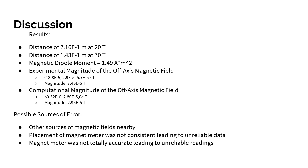The experimental magnitude of the off-axis magnetic field in vector form is provided below, and its magnitude is 7.46 times 10 to the negative 5 teslas. The computational magnitude of the off-axis magnetic field in vector form is also provided, and its magnitude was 2.95 times 10 to the negative 5 teslas.